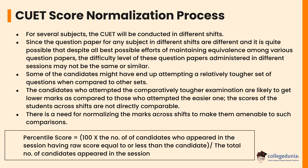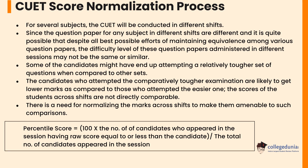There is a need for normalizing the marks across shifts to make them comparable. The percentile score formula is: 100 multiplied by the number of candidates who appeared in the session having a raw score equal to or less than the candidate's score, divided by the total number of candidates who appeared in that session.